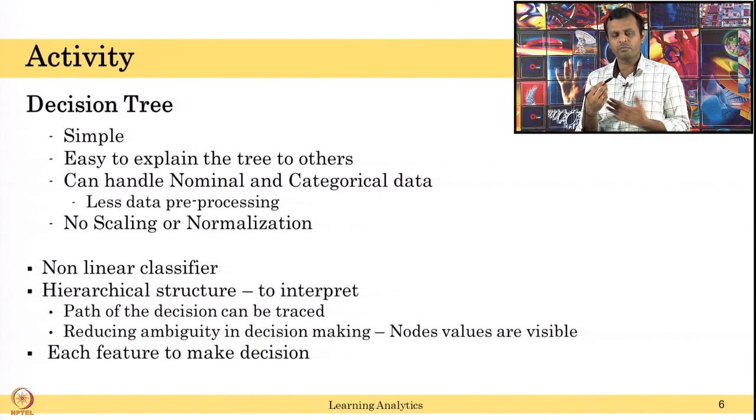That reduces the ambiguity in the user when you look at the decision tree. When you visually look at the decision tree, you know how the particular decision has been made. You can provide informed adaptation, informed hints or informed recommendations to the students. Also, each feature is considered to make a decision - that is also an advantage and a disadvantage. Only one feature is considered at a time, other features are not considered. But each feature is actually considered to make a decision, that is actually an advantage.